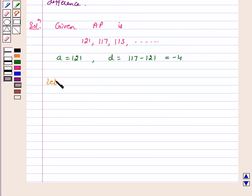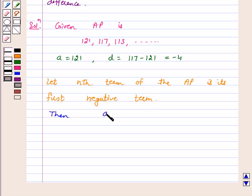Let the nth term of the AP be its first negative term. Then a_n < 0. This implies a + (n-1)d < 0. This implies 121 + (n-1) into